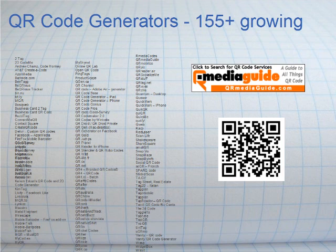This list has 155 — and I know it's a little bigger right now — different sources that can generate a QR code. So if you want to make a QR code for yourself, you've got to have a QR generator. You'll also find lists of QR apps and other QR features over at the QR Media Guide.